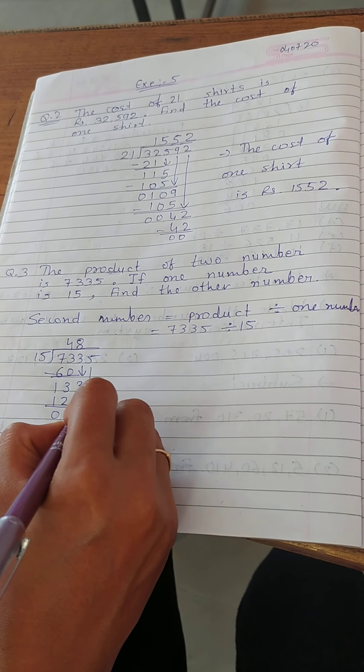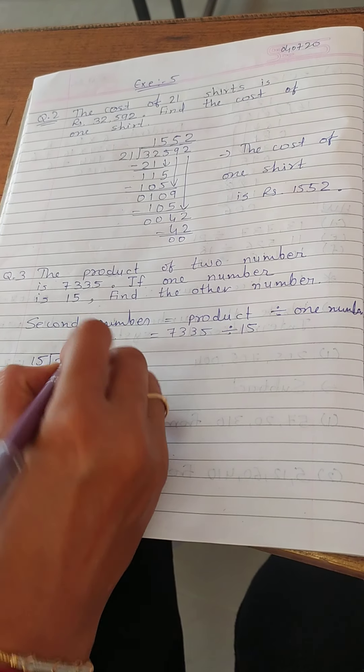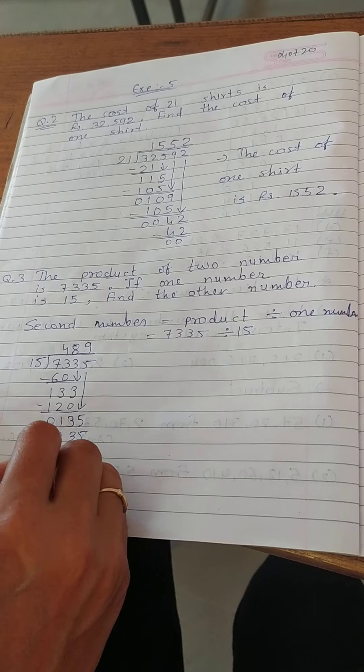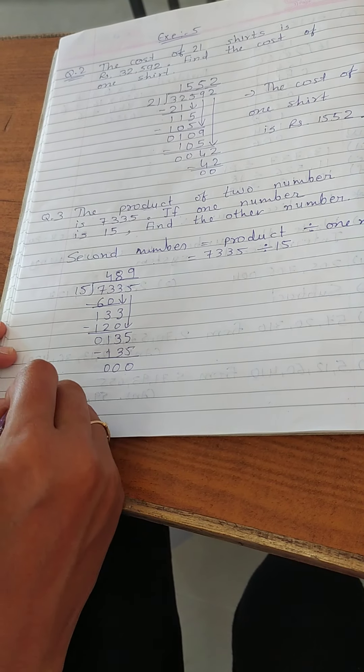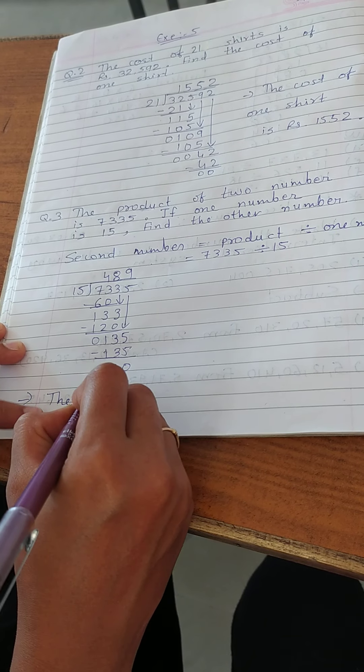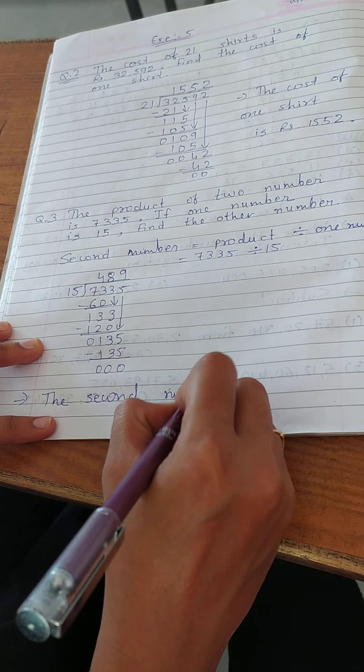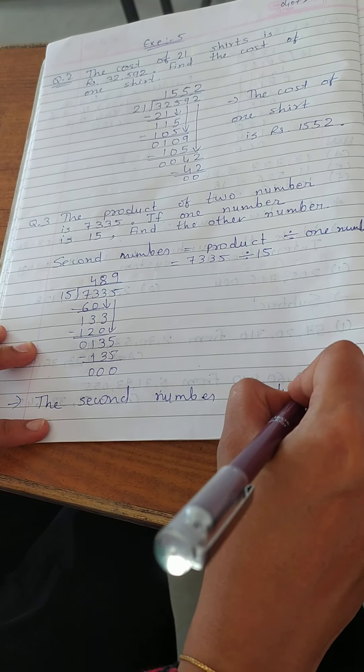Now drag the number 5. Here we get 135. So 15 times 9 equals 135. So we can write here that the second number is 489.